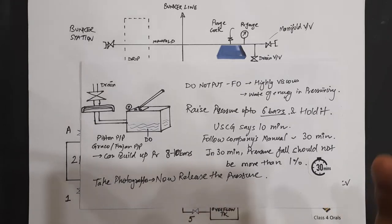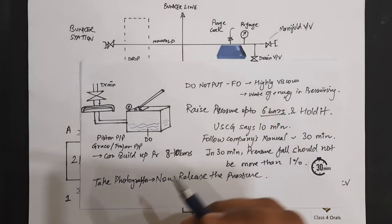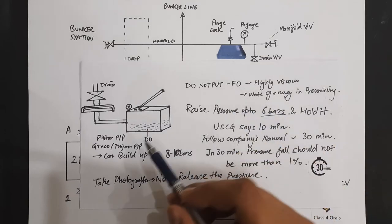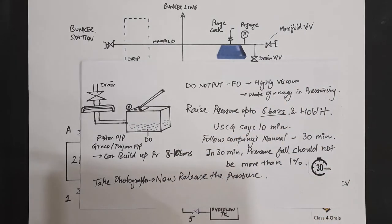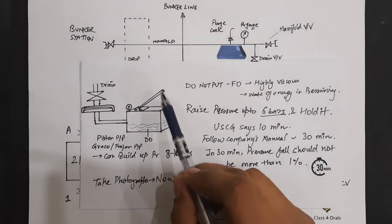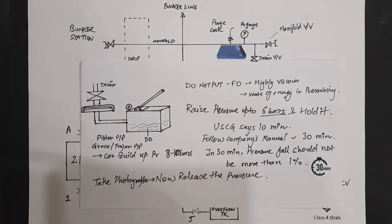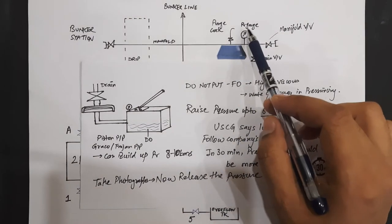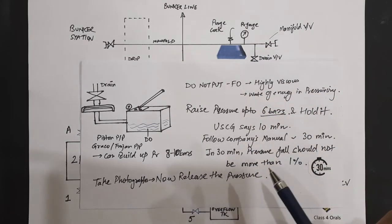Because if the tank is having 5 to 10 tons of fuel oil or bunker oil, and adding up the 3 to 4 liters or 10 liters of diesel oil is not going to make any difference in the bunker tank. So, we have to manually pump it and raise the pressure up to 6 bars. And then hold it. Once our pressure has reached on the bunker manifold 6 bars, hold it. Because we are going to test at 6 bars.